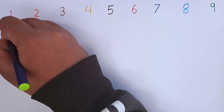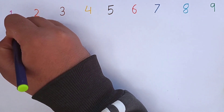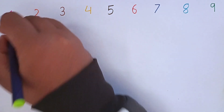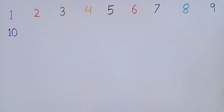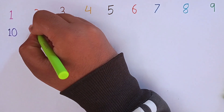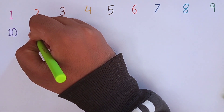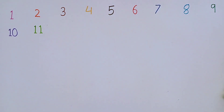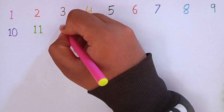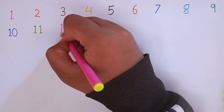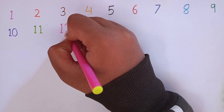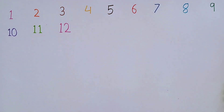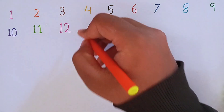Now I am writing 9. This is 9. After 9, the next number will be 10. Remember kids, after 9 the next number is 10. 1, 0 — 10. This is 10. After 10, the next number will be 11. Now I am writing 11. 1, 1 — 11. This is 11. After 11, the next number will be 12. 1, 2 — 12. This is 12.